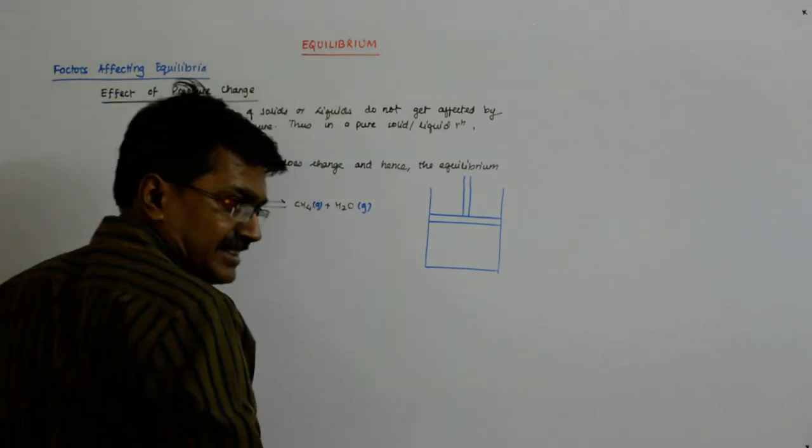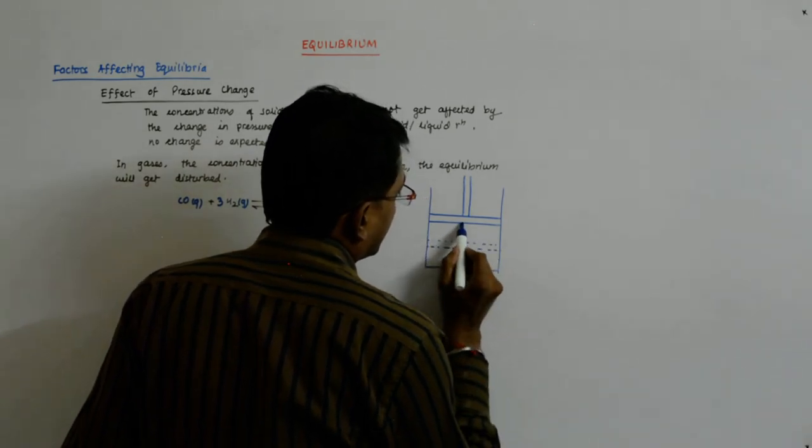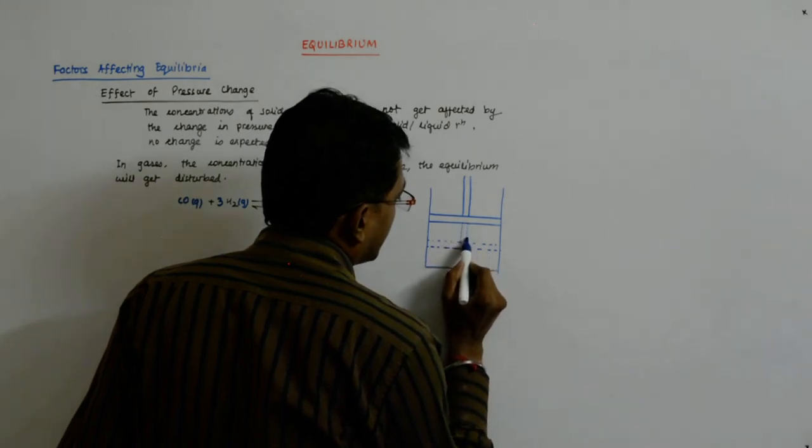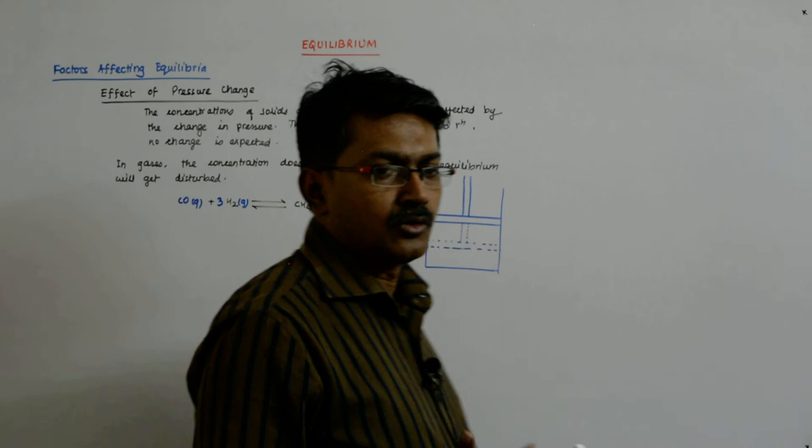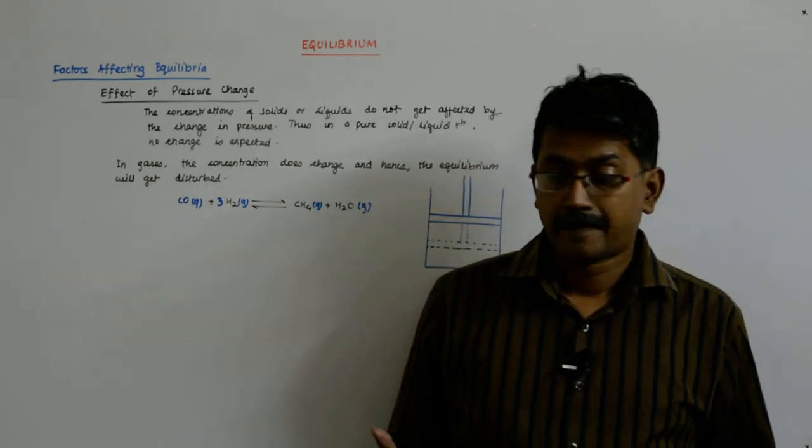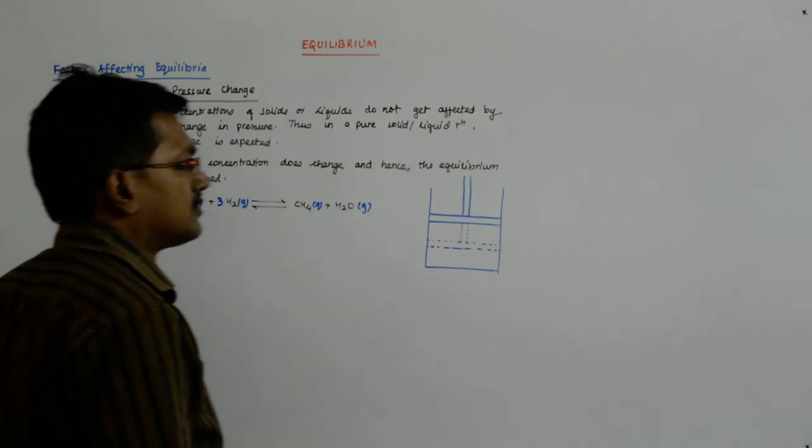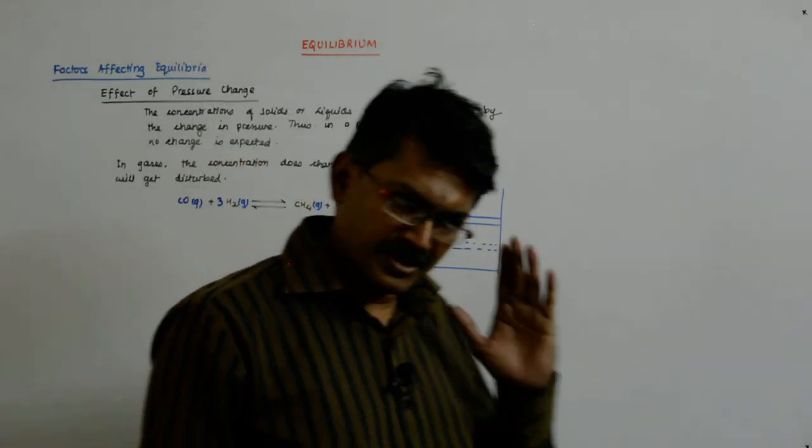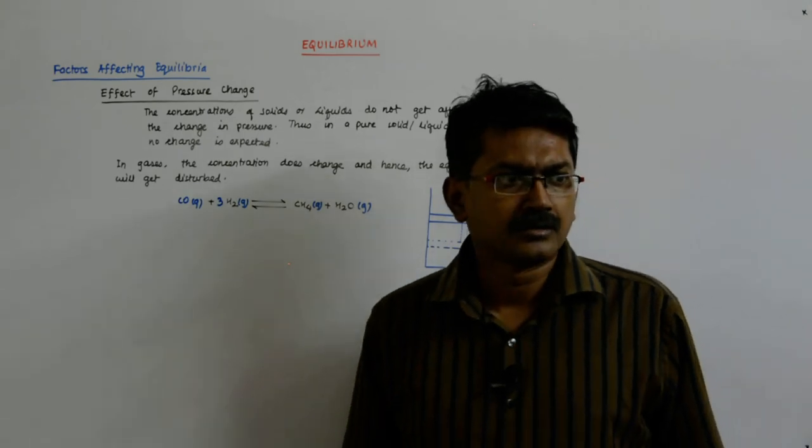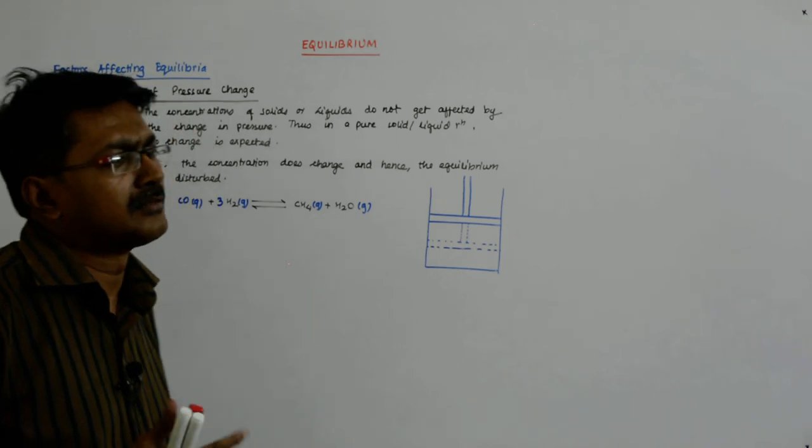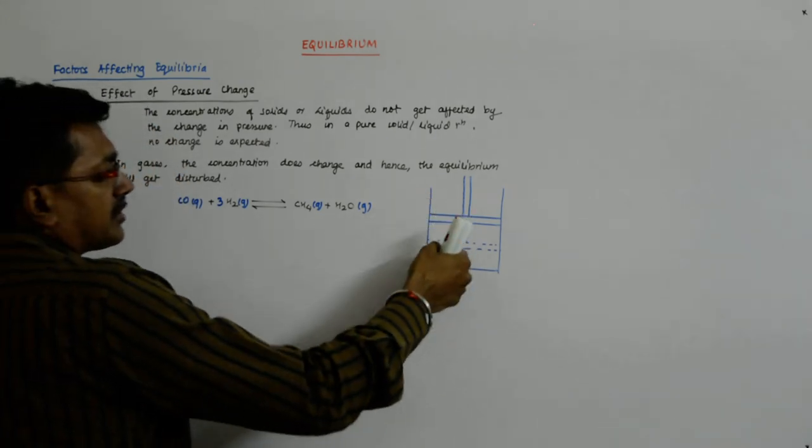You suddenly compress this. Let us say you bring the piston here at this dotted thing. Now it will try to relieve this pressure. How? You are not allowed to take out gases. You cannot take out gases. The temperature is the same. You cannot increase the volume. You have compressed it.